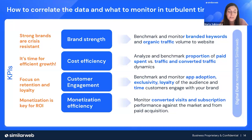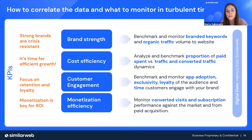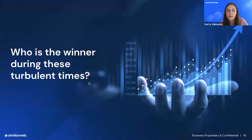Last but not least: monetization efficiency. ROI is the key at any hard time when other stakeholders in companies are evaluating all budgets multiple times. Monitoring converted visits or subscription growth performance against the market, in the context of money invested in paid customer acquisition, can give us an amazing output. We can see some market segments are going down, others going up, and each crisis is actually an amazing opportunity for new brands to grow — and we will show the rise of one of them: Shein.